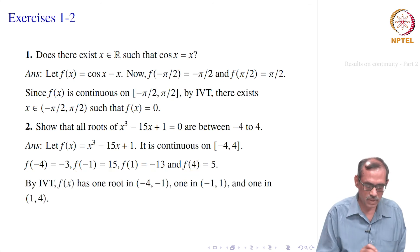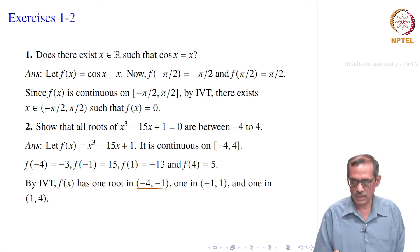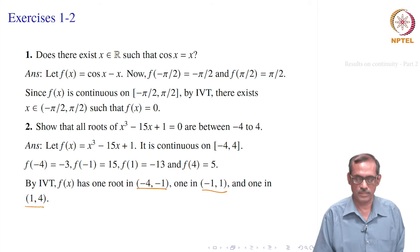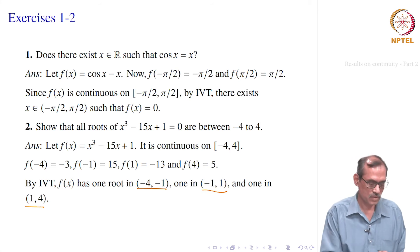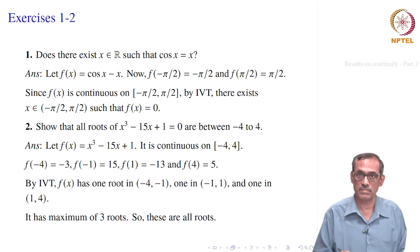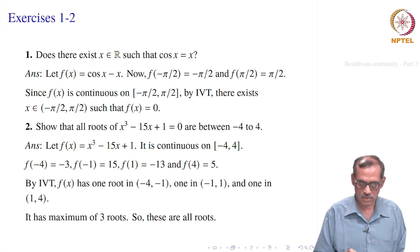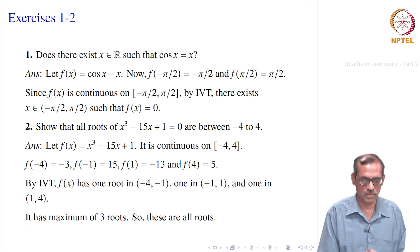So we have found 3 roots between −4 and 4: one within (−4, −1), another within (−1, 1), and another in (1, 4). But this is a cubic equation, so it has at most 3 roots — that is what we use from the Fundamental Theorem of Algebra, which we are assuming here. Therefore all the roots are inside the interval [−4, 4].